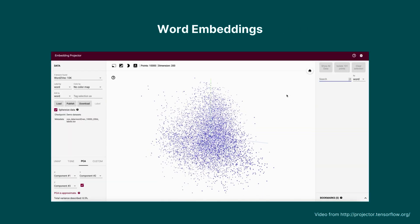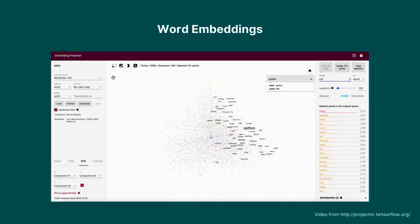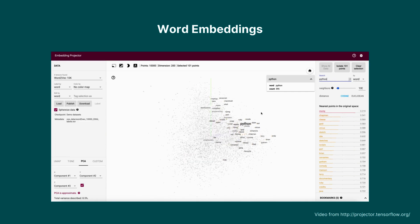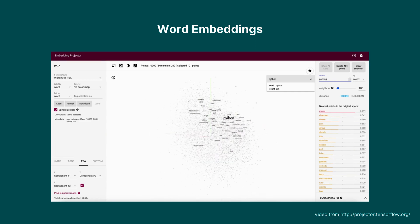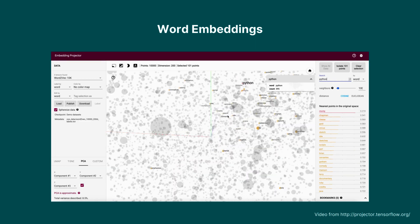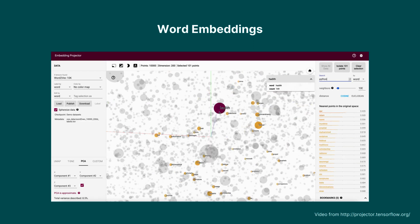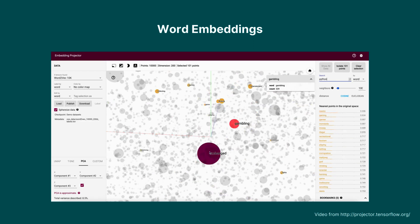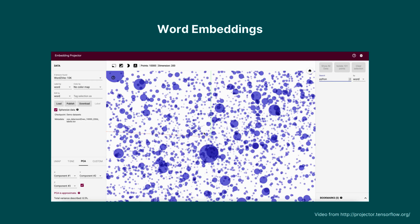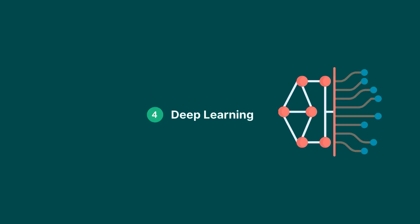Once you get a bit more advanced, you can look into word embeddings. These are a way of representing words as numerical vectors, which allows the machine to understand the meaning behind the words in a way. The most popular word embeddings are Word2Vec, GloVe, and BERT.